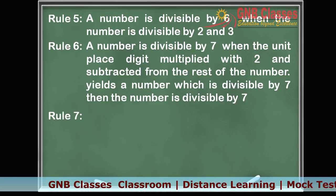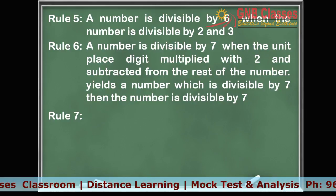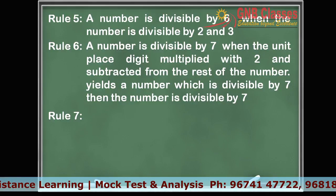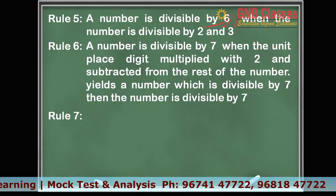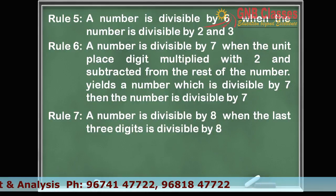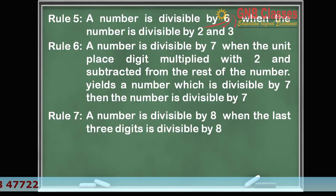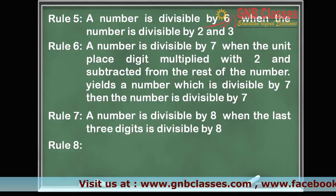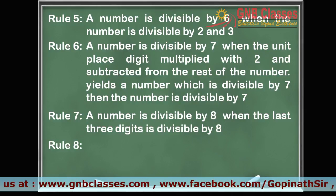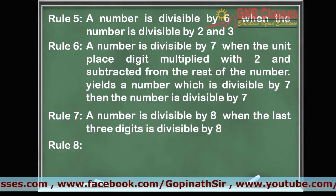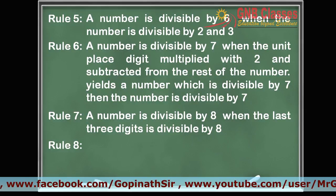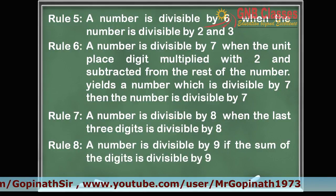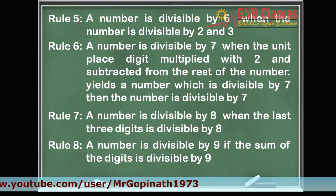Rule 7 speaks about whether a number is divisible by 8 or not. A number is divisible by 8 when the last 3 digits of that number are divisible by 8. Rule 8 speaks about whether a number is divisible by 9 or not. A number is divisible by 9 when the sum of all the digits is divisible by 9.